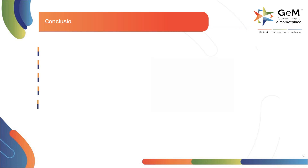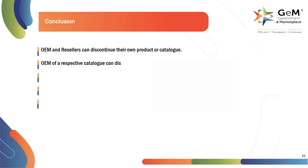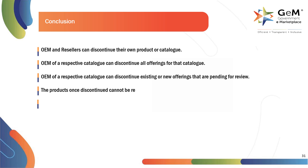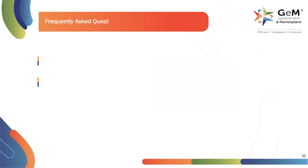Here are the key takeaways from this module. OEM and resellers can discontinue their own product or catalog. OEM of a respective catalog can discontinue all offerings for that catalog. OEM of a respective catalog can discontinue existing or new offerings that are pending for review. The products once discontinued cannot be restored. The reseller stock for the discontinued product will also be discontinued.